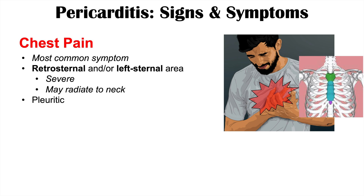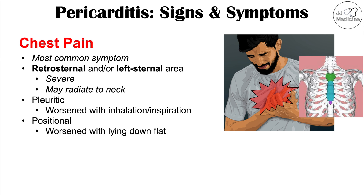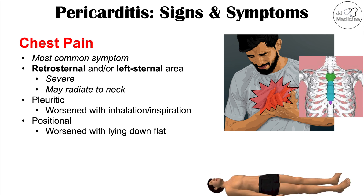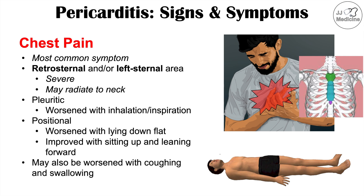There are particular characteristics with regards to this chest pain, including pain being pleuritic in nature. Pleuritic means that the pain gets worse with inhalation or inspiration — when you take a deep breath in, your lungs expand and can push onto the pericardium, and if it's inflamed, that can lead to pain. The pain is also positional — it's worsened when the patient is lying down flat, as gravity pulls down onto the heart and causes pressure onto the pericardial sac. If a patient sits up and leans forward, that can reduce some of the pressure onto the pericardium, improving the pain. The pain can also be worsened with coughing and swallowing.